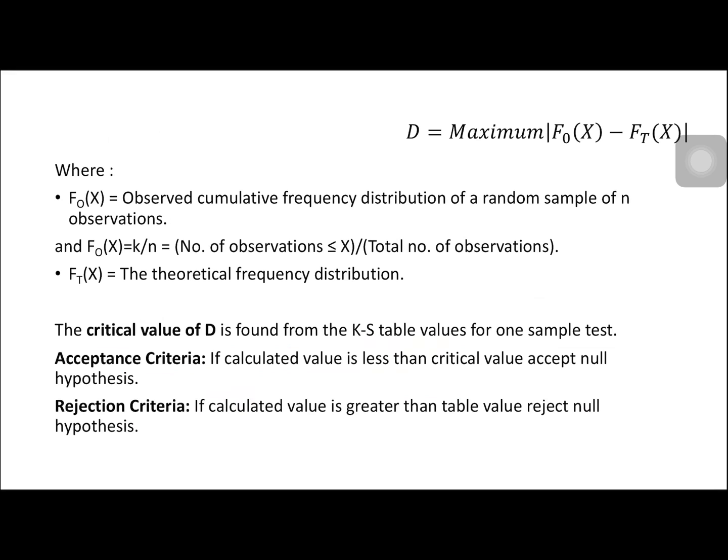The KS test formula can be read as the maximum absolute value of the difference between the observed cumulative frequency and the theoretical cumulative frequency. For the observed cumulative frequency, we use this formula: K over N, the number of observations less than or equal to X, divided by the total number of observations.